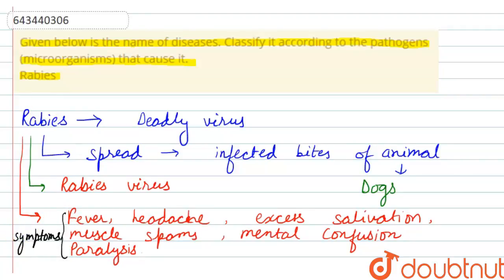Additional symptoms include mental confusion, and after a long time it can also lead to paralysis. According to the question, the microorganism that causes rabies is a virus, which is the correct answer.